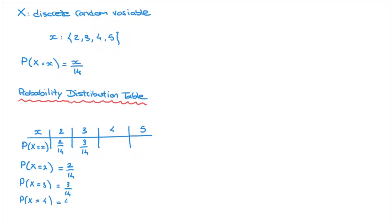For x = 4, the probability is 4/14. And finally, P(X = 5) = 5/14, which we add to the table. And that is our completed probability distribution table.